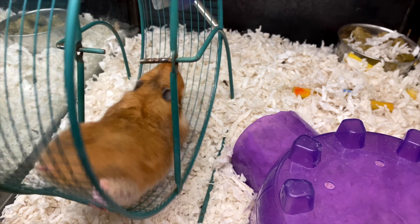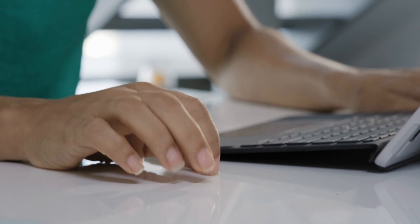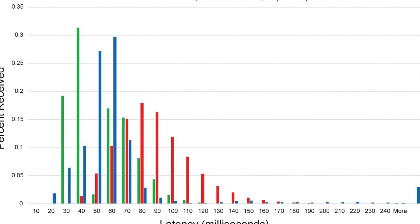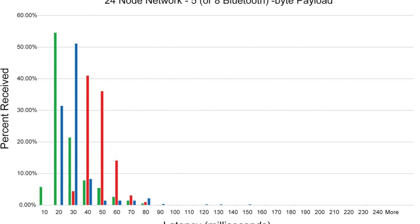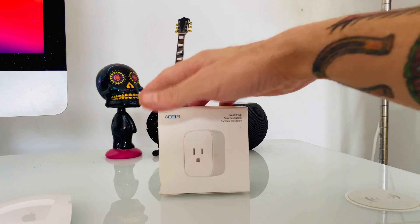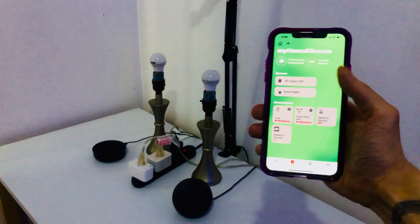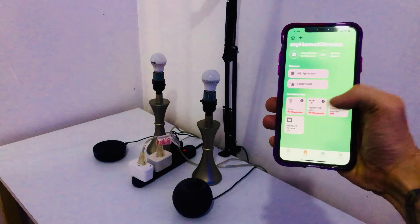But as Brian from Automate Your Life so aptly points out, we often equate speed with how fast devices respond to requests, which would be latency. While the data shows that Thread beats Zigbee by about 20 milliseconds, I wanted to test if this was even noticeable. So I grabbed a Zigbee smart plug from Aqara and a Thread-enabled EVE Energy, connected a couple of lamps to them, and combined them in a group in HomeKit.